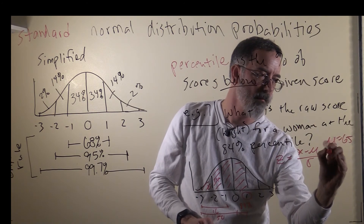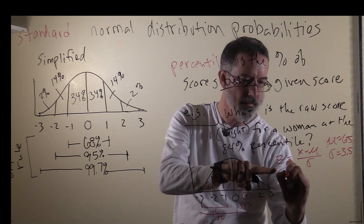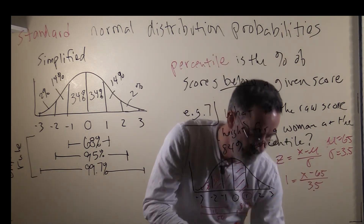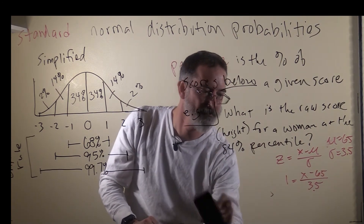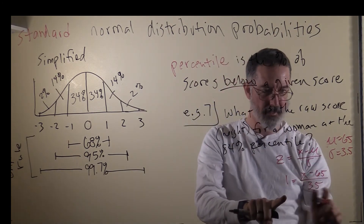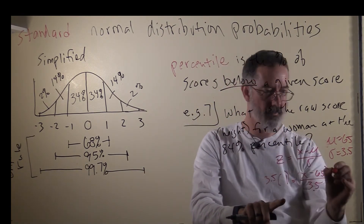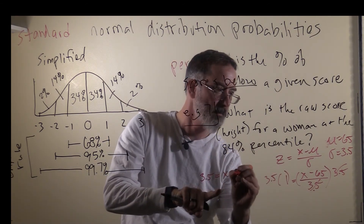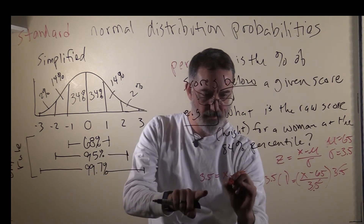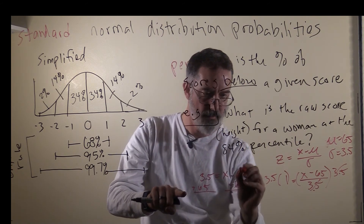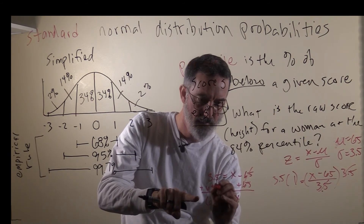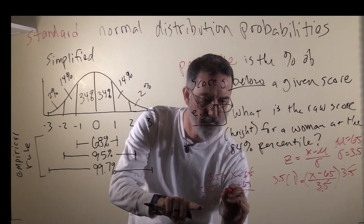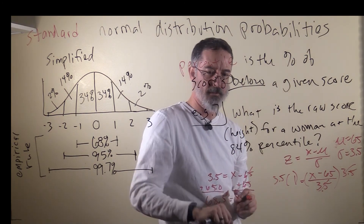Now we know her z-score, so we can use the z-score formula to calculate her raw score. The population mean is 65 and the population standard deviation is 3.5. The z-score is 1, and we want to find her raw score x. Multiplying both sides by 3.5, we get 3.5 equals x minus 65. Adding 65 to both sides, we end up with 68.5. So a woman at the 84th percentile is 68.5 inches tall.